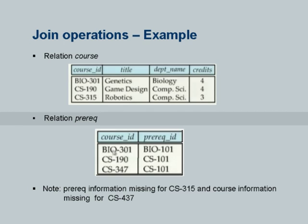What is an outer join? Here are two relations: course and prerequisites. Course 315 appears in course but not in prerequisites, CS101 appears in prerequisites but not in course, and CS347 is in course but not in prerequisites. If I took the join of these two relations on course ID, the first tuple matches the first, the second matches the second, but the third tuple in each has no match. So the result would be just two tuples.